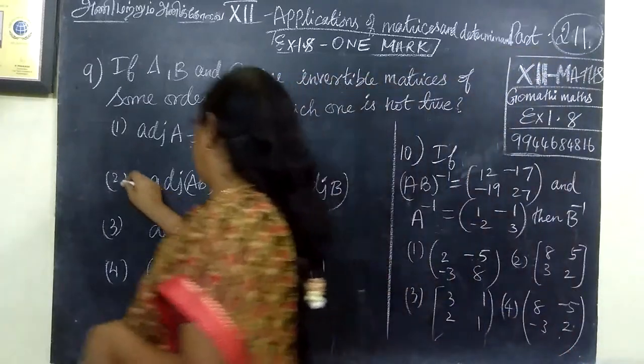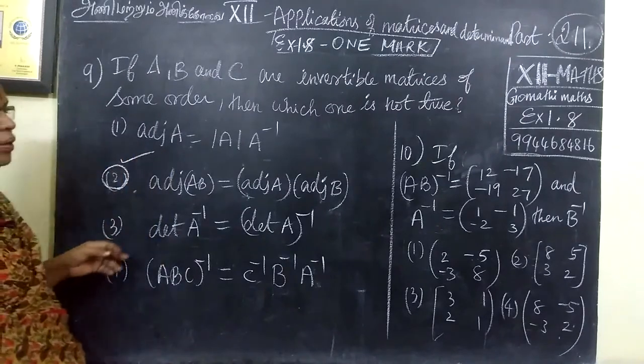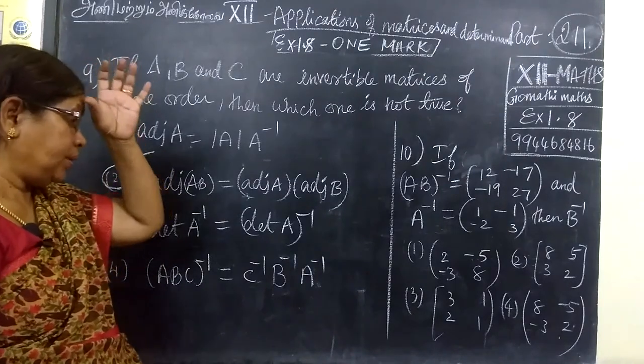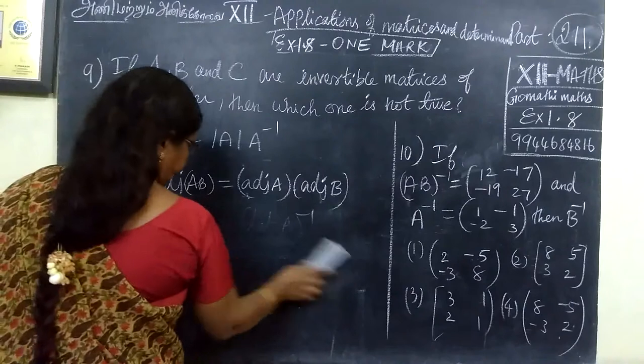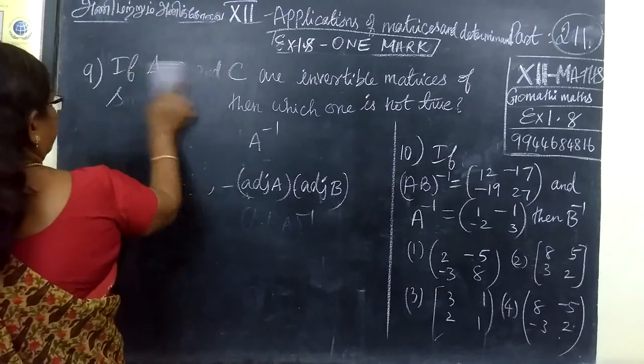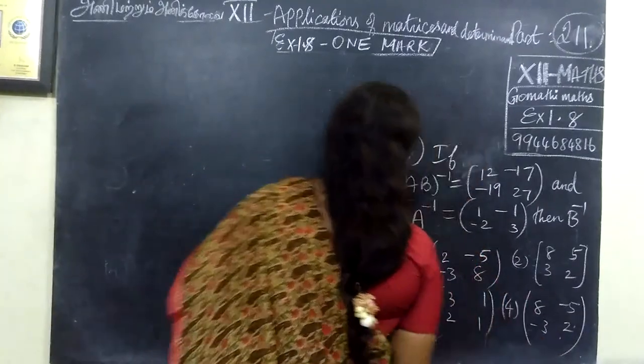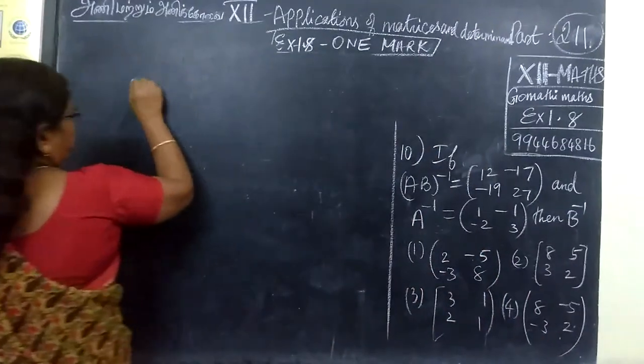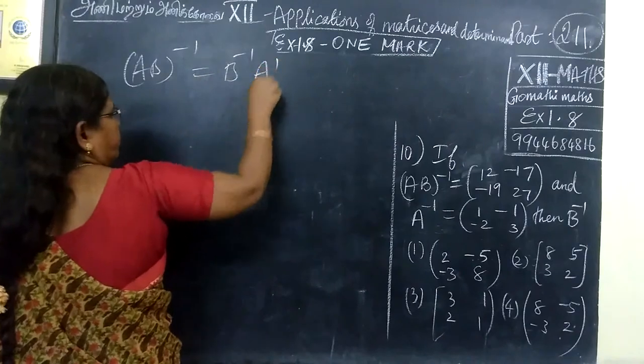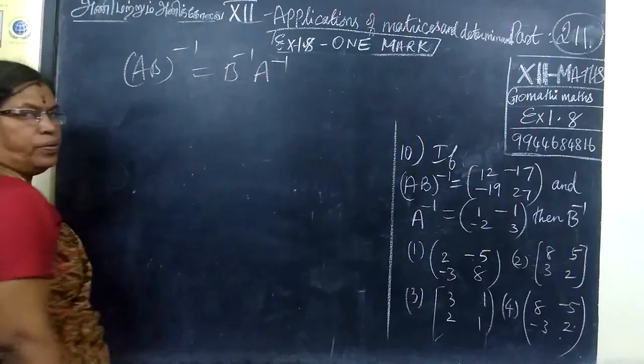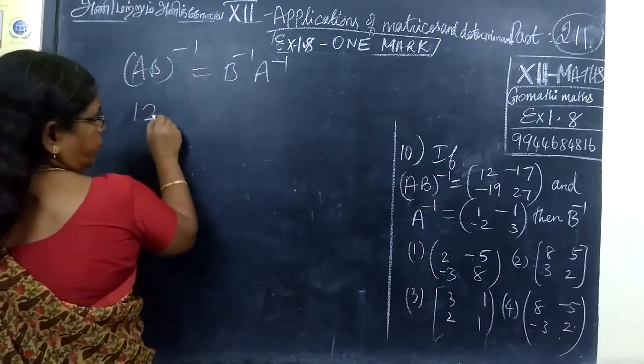Then next question No. 10. We are given AB whole inverse value. So AB whole inverse, this is the formula we know: B inverse, A inverse. This is AB whole inverse.